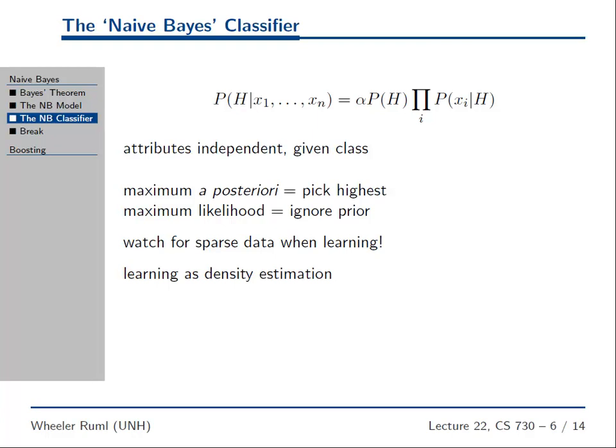There's one really important thing to address when implementing this in practice, especially on your assignment. For every pixel, what's the probability it will have some value for every class? This equation is true mathematically, but if you're going to use it in practice, you're trying to estimate a probability based on some training examples — and that's just an estimate, and it might be wrong.